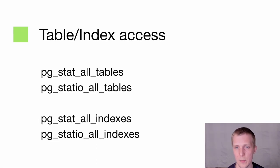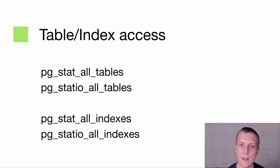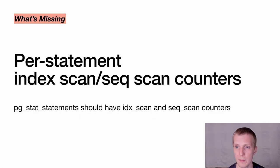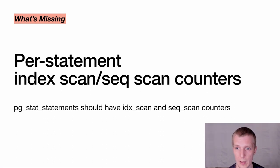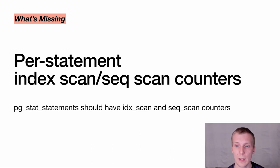Looking at table and index access, there's a lot of information already out there and you can make good use of it. The thing I find missing when optimizing indexes is knowing which statements are experiencing sequential scans versus index scans. You can use auto_explain for very particular cases, but similarly to the planning time counter, it would be very helpful to have an index scan or sequential scan counter in pg_stat_statements that just tells me roughly what to look for.